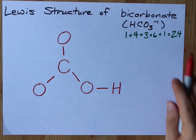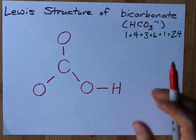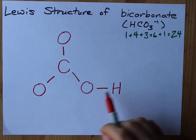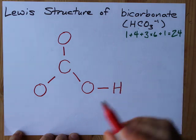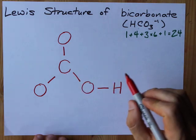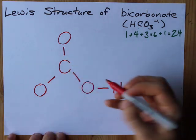And I need to complete the octets on all the outer atoms first. Hydrogen is happy with just the two, so that's good to go. These oxygens need full octets. I need eight electrons around each one. So we have eight so far.